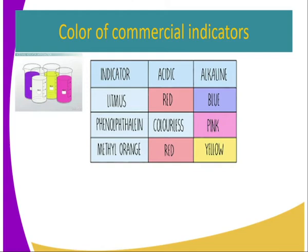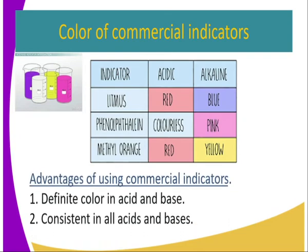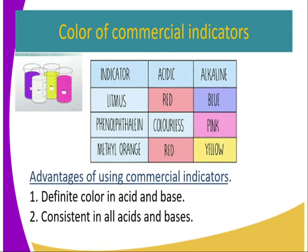Phenolphthalein is colorless in acid and pink in alkaline. Methyl orange is red in acid and yellow in alkaline substances.